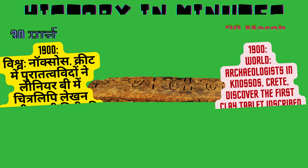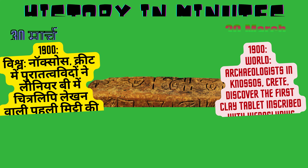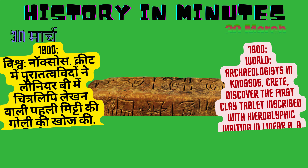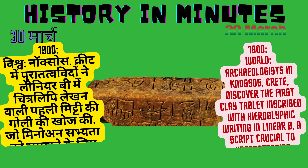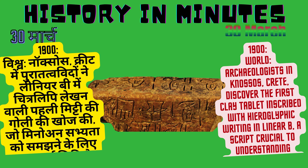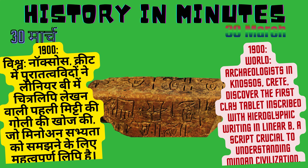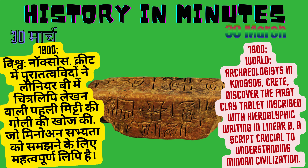1900: World — Archaeologists in Knossos, Crete, discover the first clay tablet inscribed with hieroglyphic writing in Linear B, a script crucial to understanding Minoan civilization. (Hindi: Vishwa Noxos, Crete mein puratatv vidaon ne Linear B mein chitralipi lekhan wali pehli mitti ki goli ki khoj ki, jo Minoan sabhyata ko samajhne ke liye mahatvapurn lipi hai.)